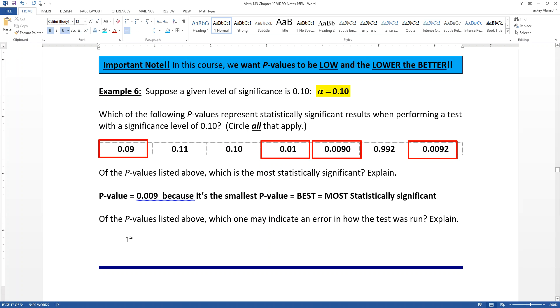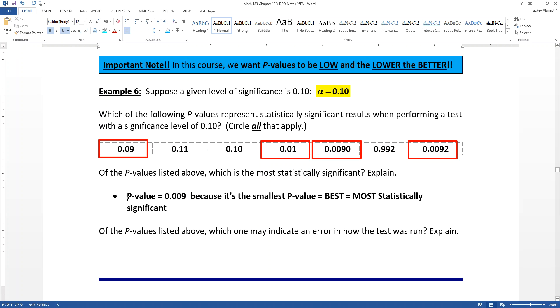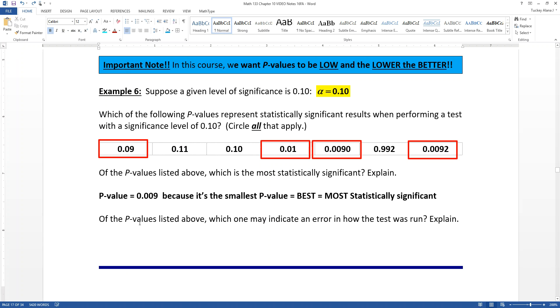All right. Now, of the p-values listed above, which one may indicate that we made an error somewhere and we messed up? Well, in case you missed it, generally p-values are small things.